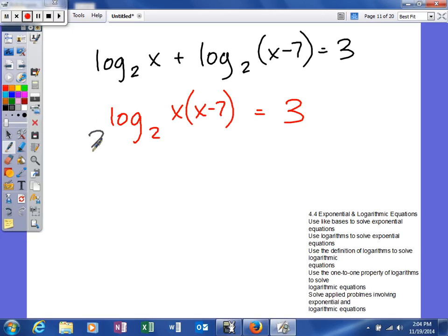So now what I'll do, now I can exponentiate. So this will cancel. And when I actually multiply this out, it'll give me x squared minus 7x is equal to 2 to the third power. Well, 2 to the third power is actually 8.